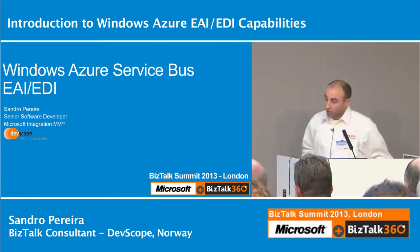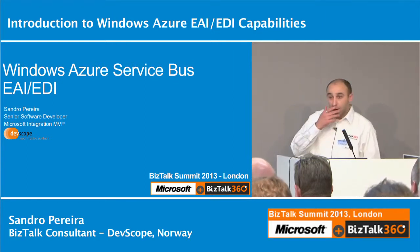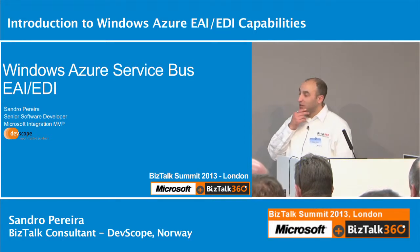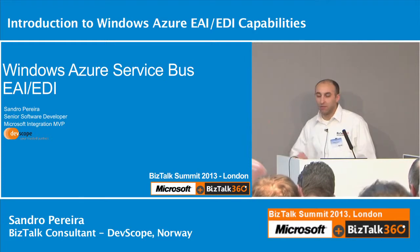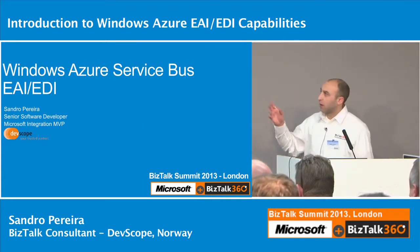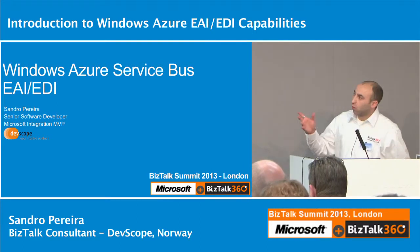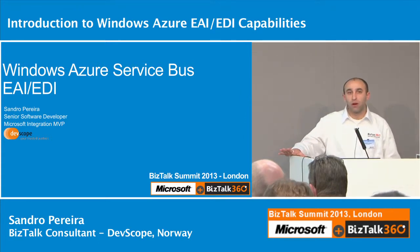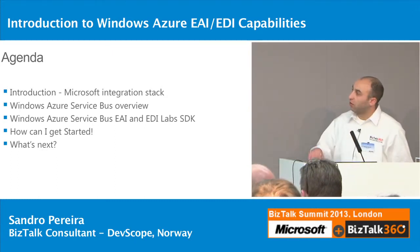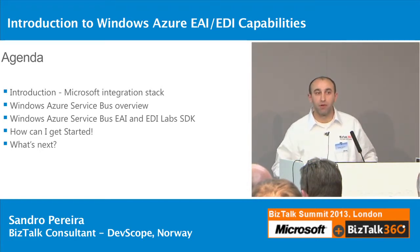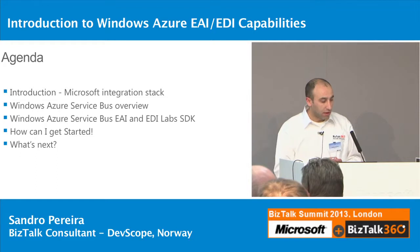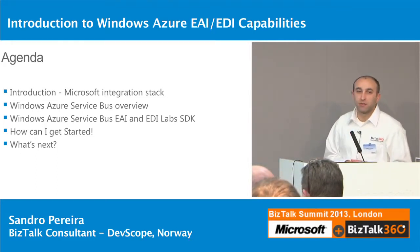I will talk today about the new Windows Service Bus ADI Labs April Release. This is the actual name today. Maybe in the future it will be Windows Azure BizTalk Service. I'll do a quick introduction to the Microsoft integration stack, a quick overview of what we have today in the Windows Service Bus, and then we will talk about the new features of ADI SDK Labs from the April Release — how can we start developing and publishing things in the cloud, and what you could expect in the next release.